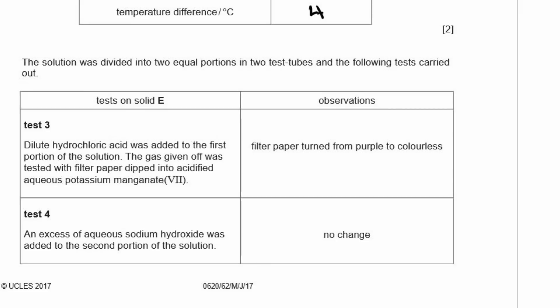The solution was divided into two equal portions in two test tubes and the following tests were carried out. So then test three, dilute hydrochloric acid was added to the first portion of the solution. The gas given off was tested with filter paper and dipped into acidified aqueous potassium manganate 7. The filter paper turned from purple, which is the color of aqueous potassium manganate 7, to colorless. And this is the result, when you add dilute hydrochloric acid, and that's the result. It is for sulfites. It's a sulfite. Okay, so test four, an excess of aqueous sodium hydroxide was added to the second portion of the solution, and there was no change. Alright, so it looks like the result is going to be sodium sulfite.